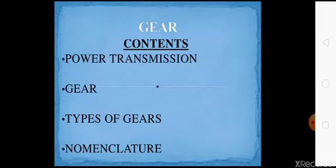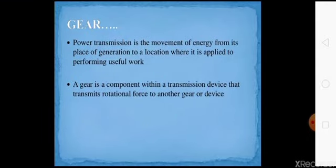First, let's look at power transmission. Power transmission is the movement of energy from its place of generation to the location where it is applied to performing useful work. Power is transferred from one place to another using power transmission. A gear is one of the power transmission devices. A gear is a component within a transmission device that transmits rotational force to another gear or device.